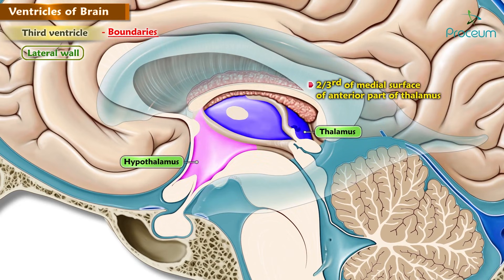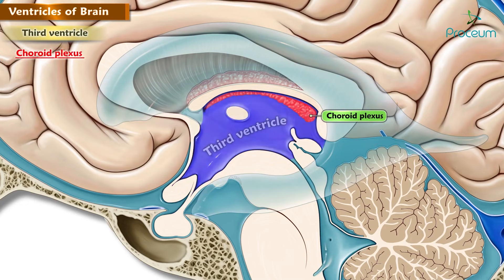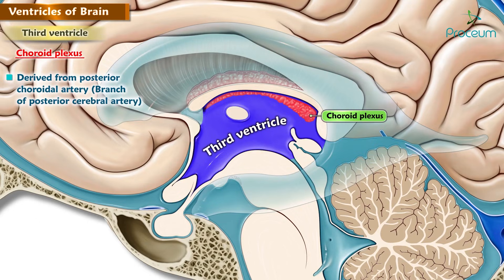The lateral wall also includes the hypothalamus, and the hypothalamic sulcus separates the thalamus from the hypothalamus. The choroid plexus of the third ventricle is derived from the posterior choroidal artery, which is a branch of the posterior cerebral artery.